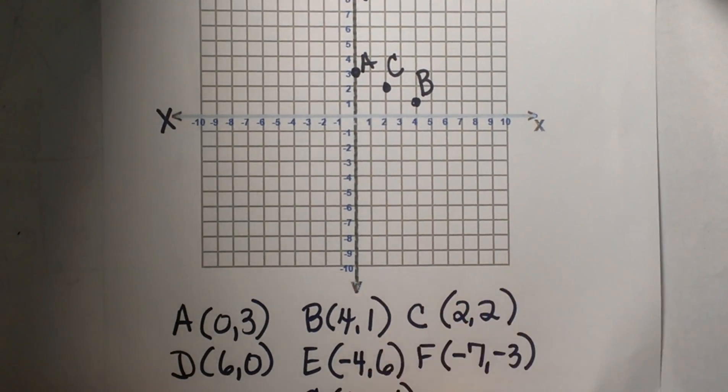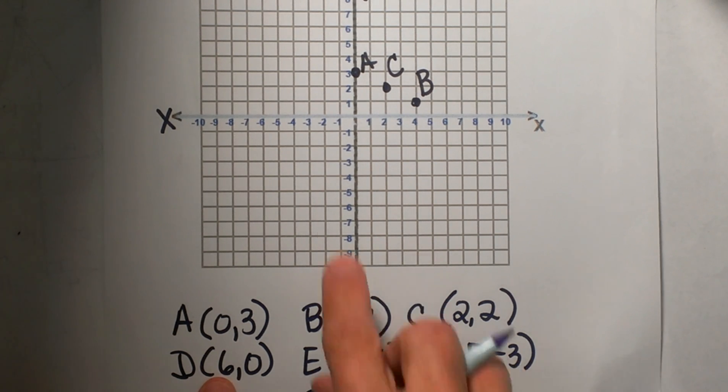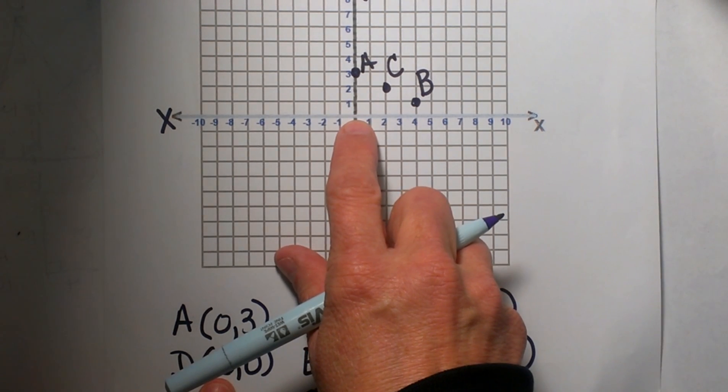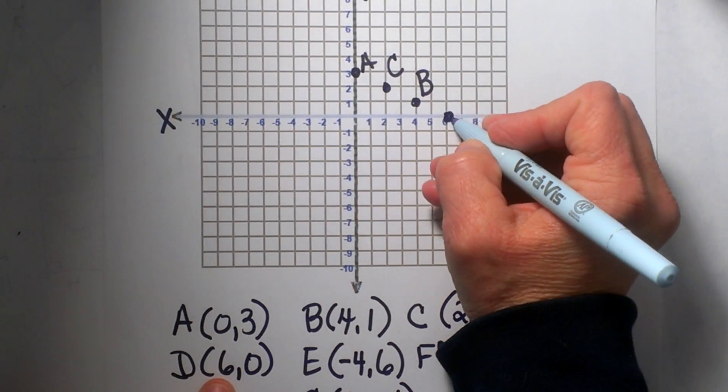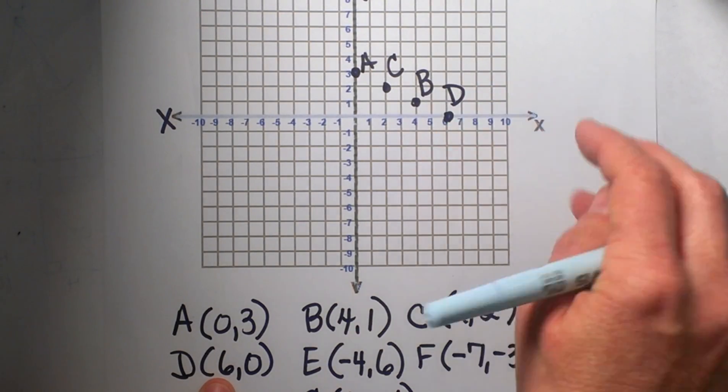Let's do one more of those. Now we are going to look at (6,0). 6 is my x direction so I am going to go over 6, but up and down 0, so I am going to land on the x-axis for that one.